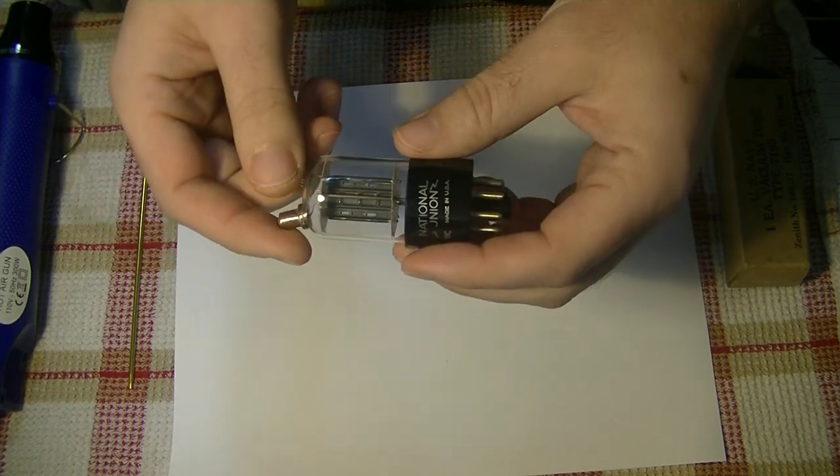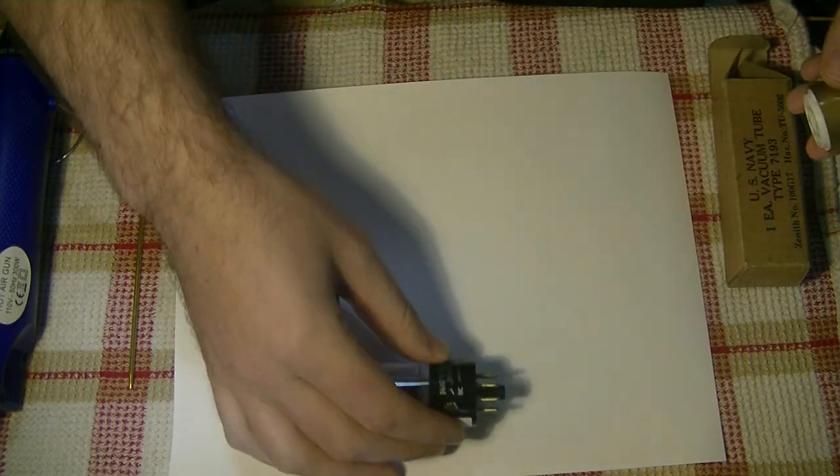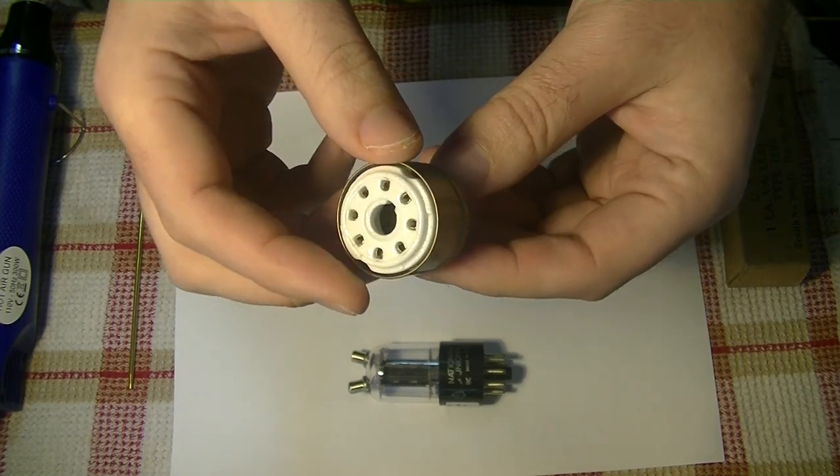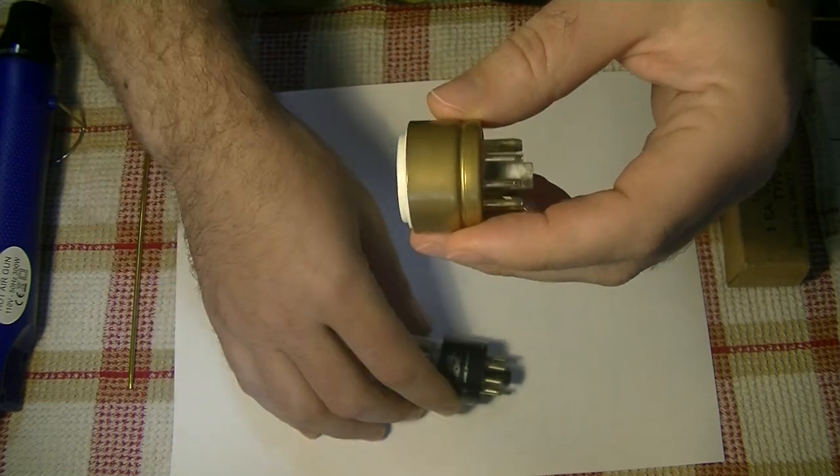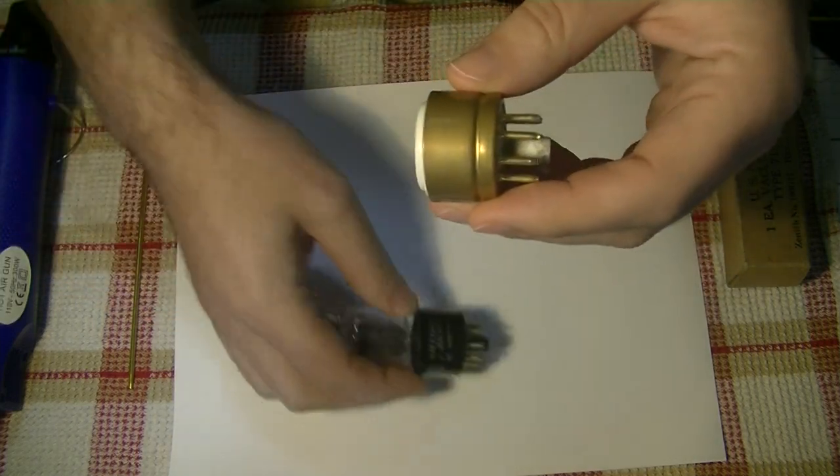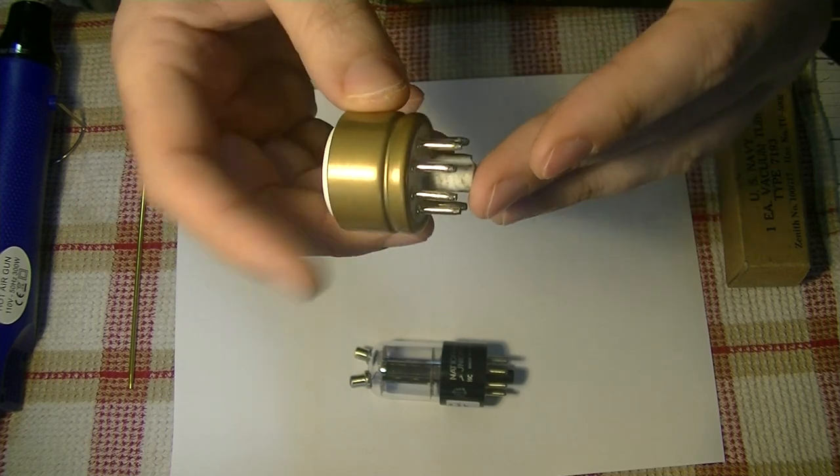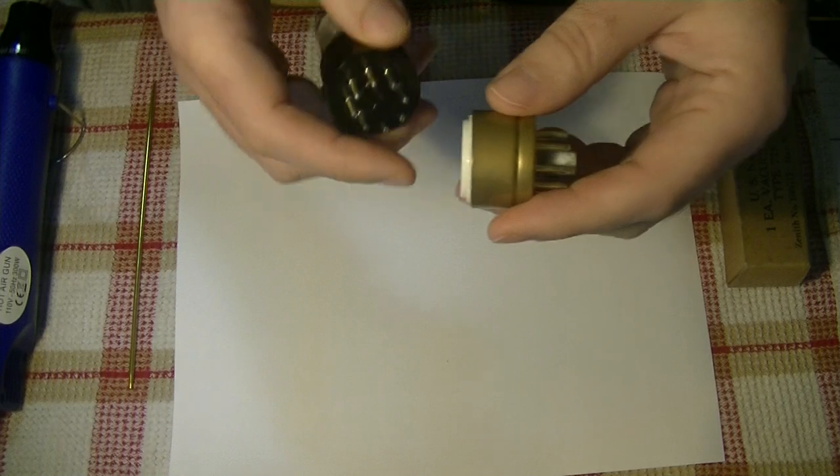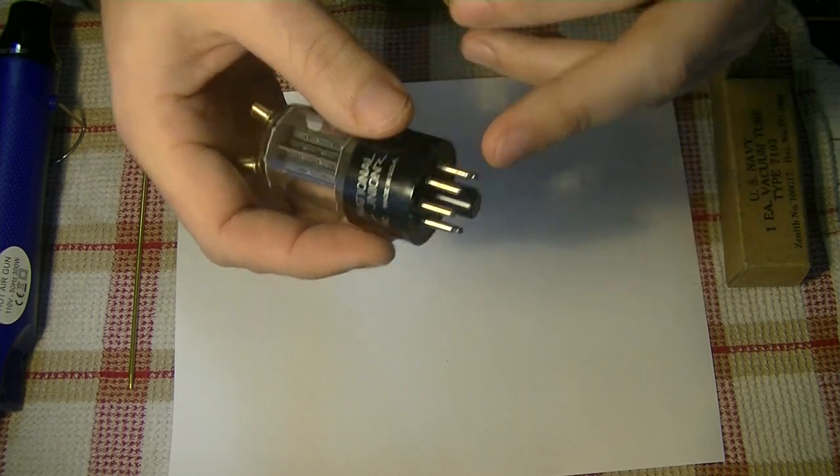That's why we strongly recommend using socket savers or lifters as they're sometimes called. Now I don't have our standard 8-pin one here. This is actually one of our Loctal adapter slash lifters right here. But it does the same job, and all it does is it gives you essentially an extra base height to work with. It will also save on wear and tear on your amplifier's socket. This is a lot easier to replace than the built-in socket that's probably soldered to a board. But we strongly recommend these, especially for those amps where it's really hard to get to the tube base to grasp it to pull a tube out.